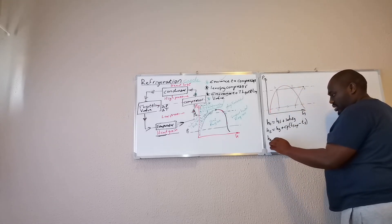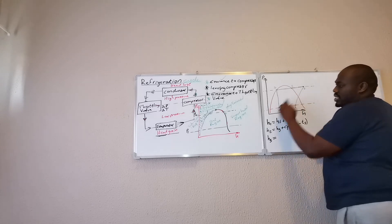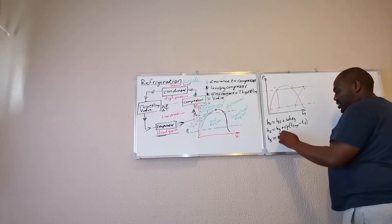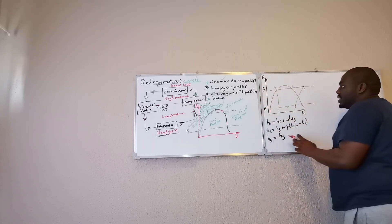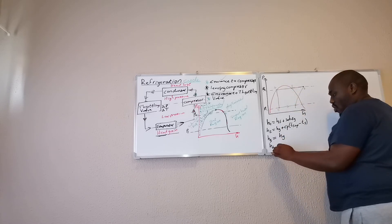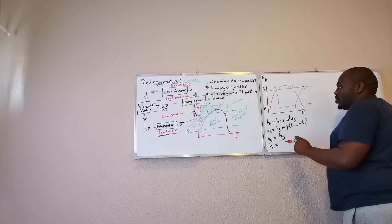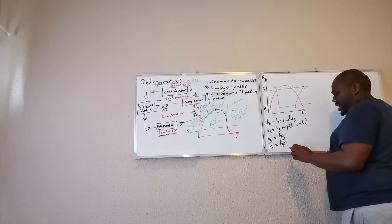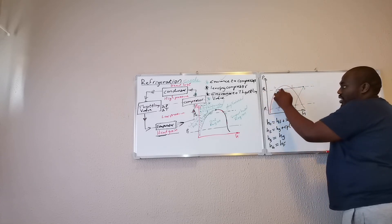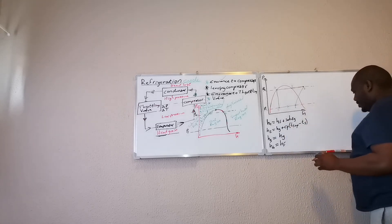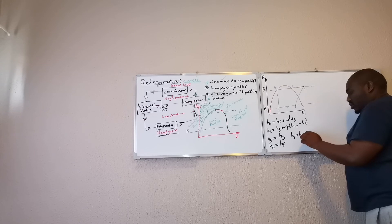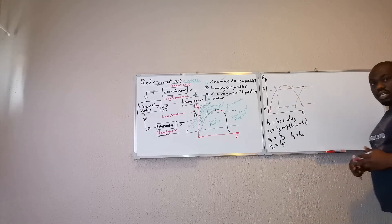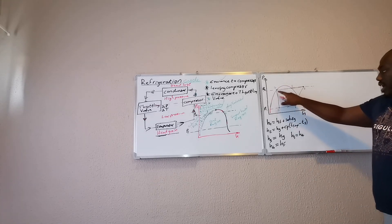H3, H3 is on my dry saturated line. So, H3 would be simply HG at the high pressure line. Then, we come to H4. H4 would be HF again at the high pressure line because it's on my liquid saturated line. So, then my enthalpy at 5, H5 would be equal to H4 since there's no enthalpy change between point 4 and point 5.